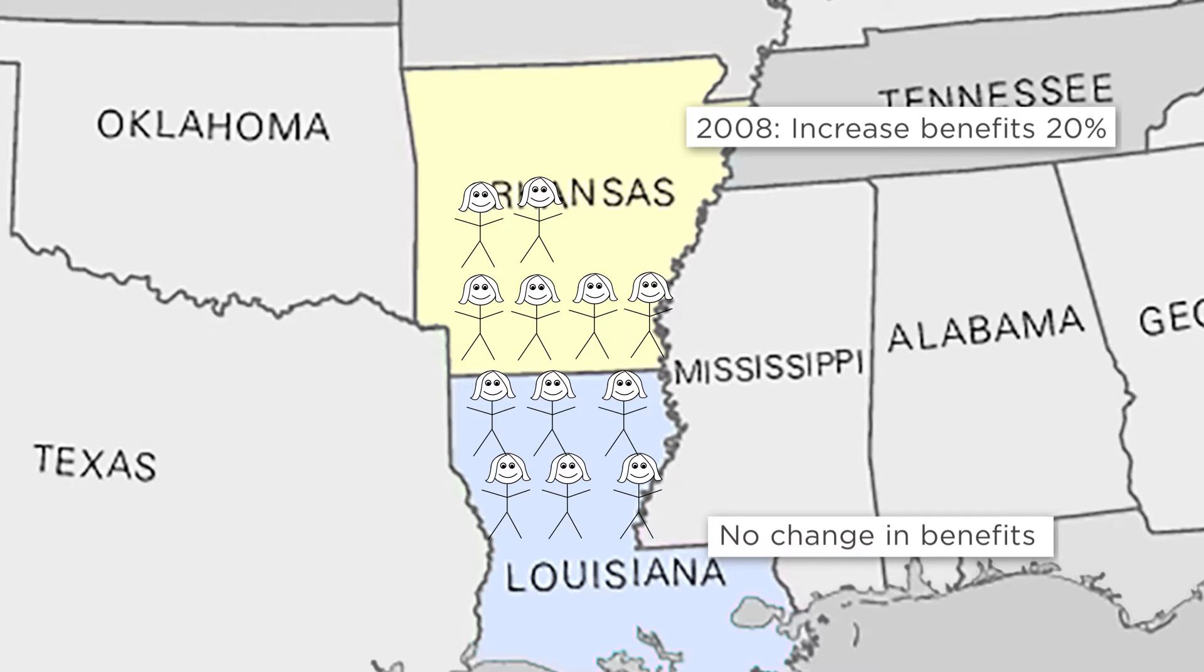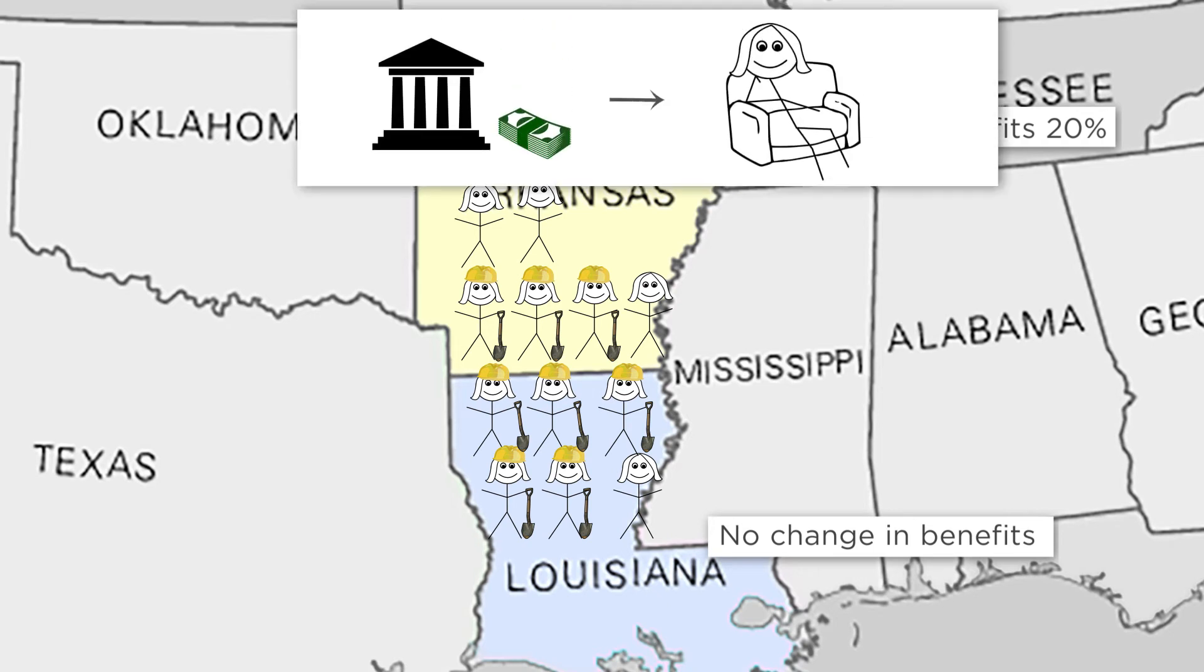Of course, where you live isn't a coin flip. But as long as overall the women in both states are similar in their decisions to work, then this is just as good. In that case, we can just look at how much women in each state decide to work before and after the 2008 benefits change in Arkansas. If women start working less in Arkansas compared to Louisiana after 2008 compared to before, then it suggests that the benefits change was causing less labor supply.